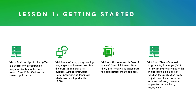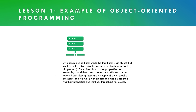Objects have their own set of features and uses known as properties and methods respectively. Using Excel as an example, Excel is an object that contains other objects — for example, cells, worksheets, charts, pivot tables, shapes, etc. Each object has its own properties. For example, a worksheet has a name; a workbook can be opened and closed — and those are a couple of a workbook's methods. So methods are like actions. You will work with objects and manipulate them via their properties and methods throughout this course.